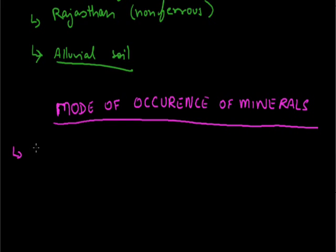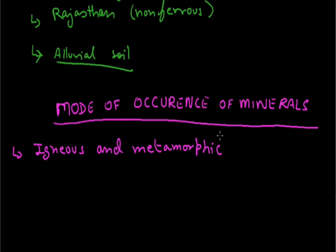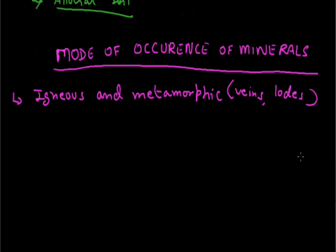Minerals are found in rocks. In igneous and metamorphic rocks, minerals mainly occur in the cracks, holes, or joints found in these rocks. The smaller cracks are called veins and the larger ones are called lodes. The major metallic minerals like tin, copper, zinc, and lead are obtained from veins and lodes of igneous and metamorphic rocks.